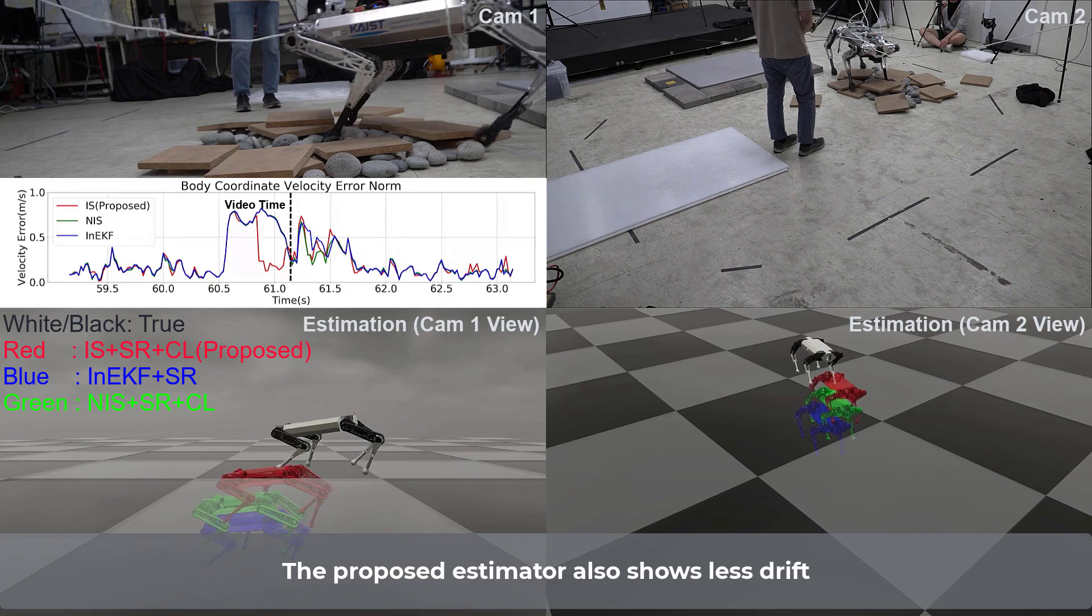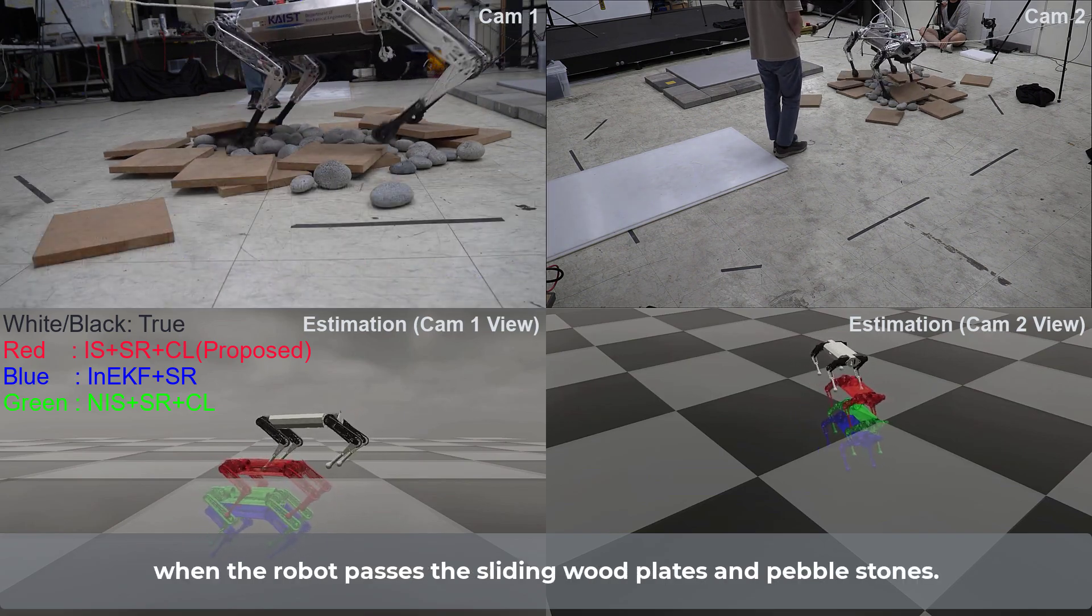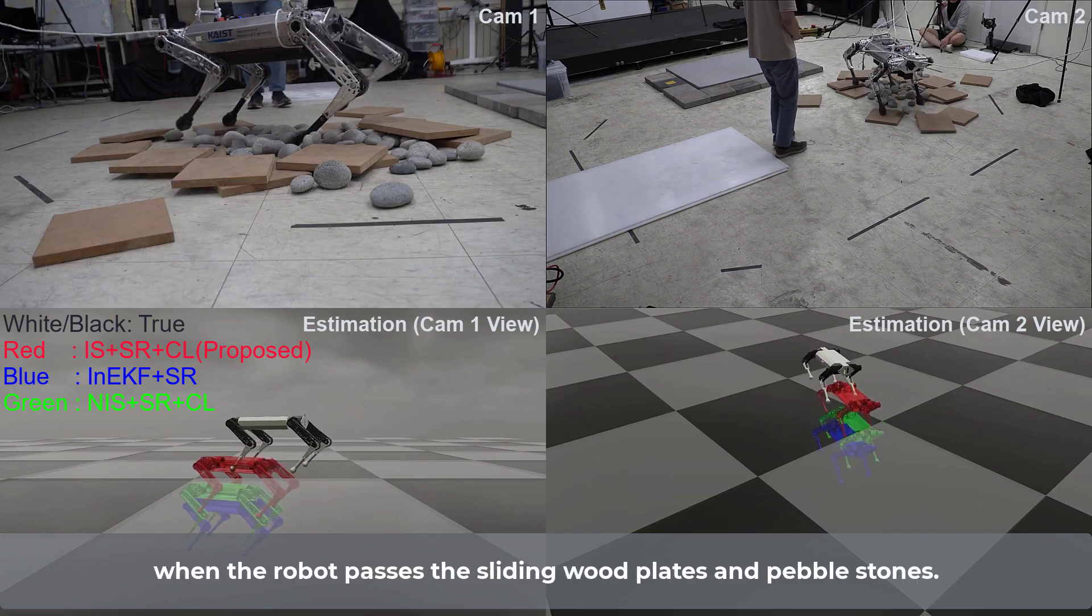The proposed estimator also shows less drift when the robot passes the sliding wood plates and pebble stones.